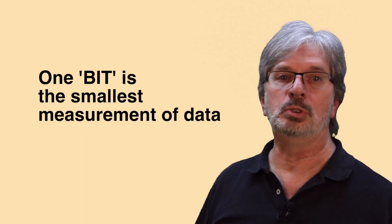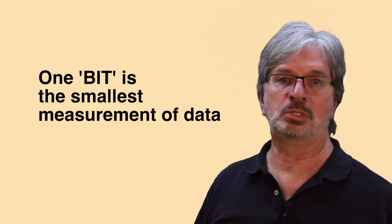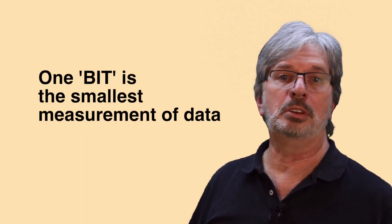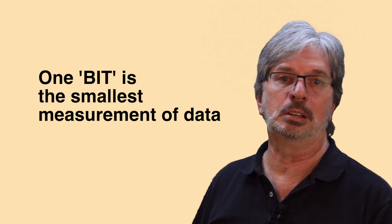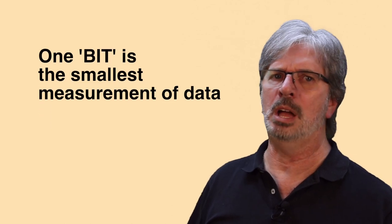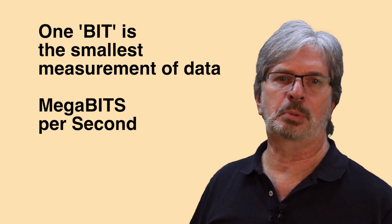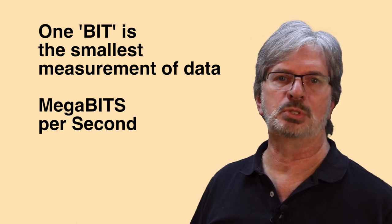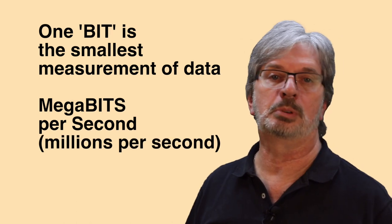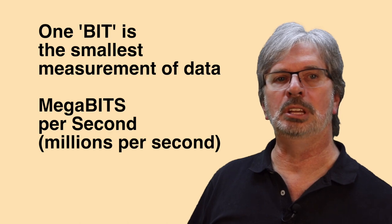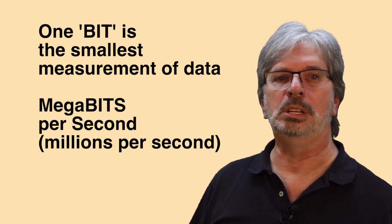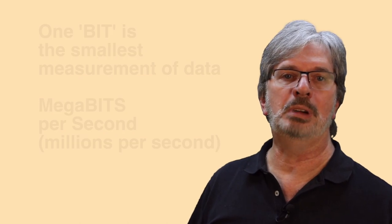Bits are the smallest unit of data measurement. Internet speed is measured by the number of bits you use in a second, but so many of them pass every second that the term megabits per second is used, roughly meaning millions of bits per second. So similar to kilometers per hour meaning the speed of travel, megabits per second is the speed of your internet connection, or how fast data can travel for you.